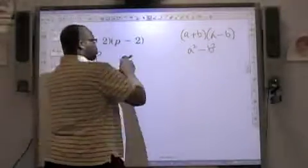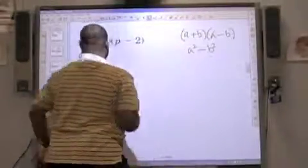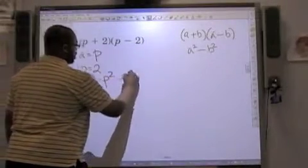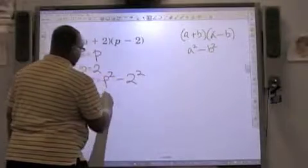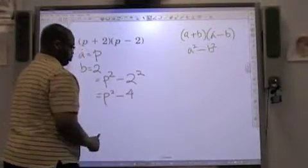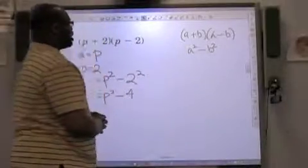And so I know it's going to equal a squared minus b squared. So this would then equal p squared minus 2 squared, which would then be simplified to p squared minus 4. It's as simple as that.